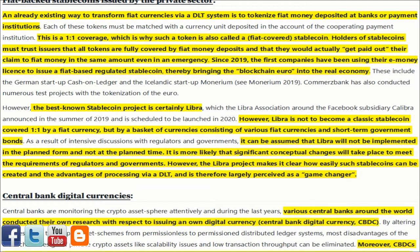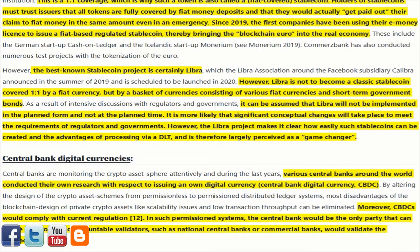These include the German startup Cash on Ledger and the Icelandic startup Monrium. Commerce Bank has also conducted numerous test projects with the tokenization of the euro. However, the best-known stablecoin project is certainly Libra, which the Libra Association — around the Facebook subsidiary Calibra — announced in the summer of 2019, scheduled to be launched in 2020.